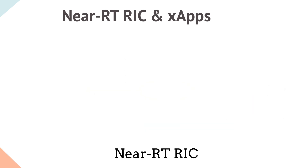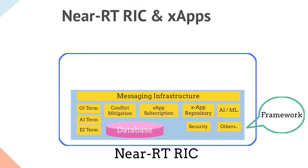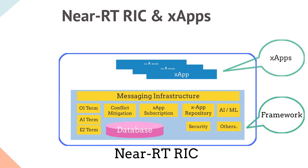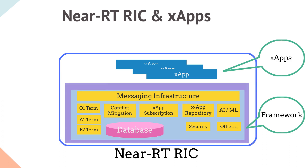The Near-RT-RIC is comprised of two sub-functions: the Near-RT-RIC Framework Platform and X-Apps. The Framework Platform includes capabilities such as X-App subscription management, conflict mitigation, database, security, AI/ML, messaging infrastructure, A1 termination, O1 termination, E2 termination, and a few others.